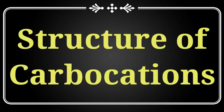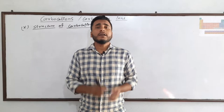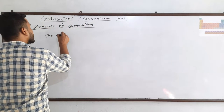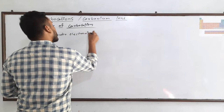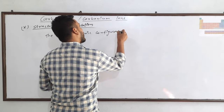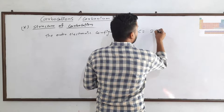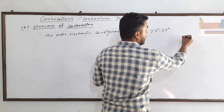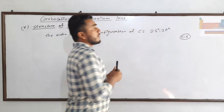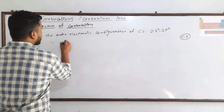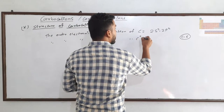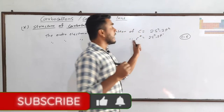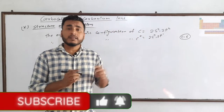Now let us see the structure of carbocations. We know that the positive charge is always on the carbon atom. The outer electronic configuration of carbon is 2s² 2p², giving 4 electrons in the outermost shell. For C⁺, we remove one electron, giving an outer electronic configuration of 2s² 2p¹.